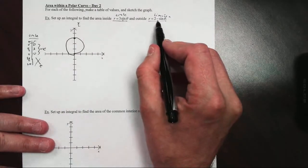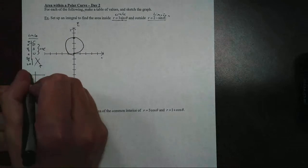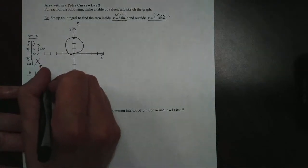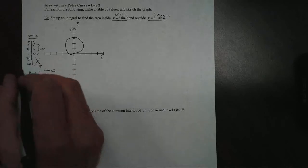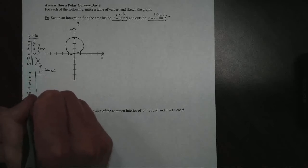Now for the other function, our limacon, same idea. If we want to graph this one, this is our dimpled limacon. Theta and r—it's going to go from zero, pi over two, pi, three pi over two, and two pi.